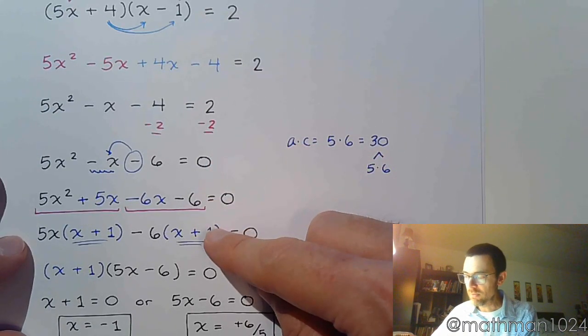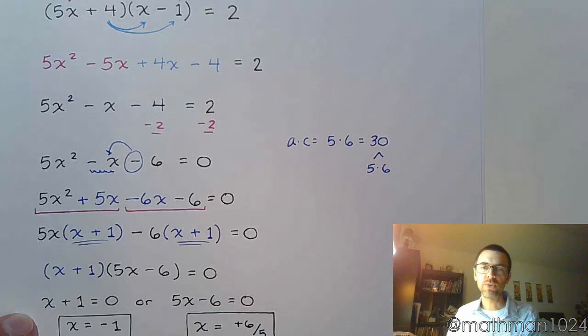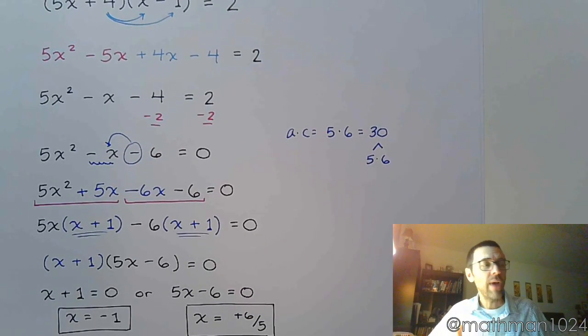Split up the middle term, factor by grouping, and then finish by using the zero factor theorem. And there you go. Factoring is a skill that's never going to go away. So make sure that you are practicing that all the time. And yeah, you're going to be all right.